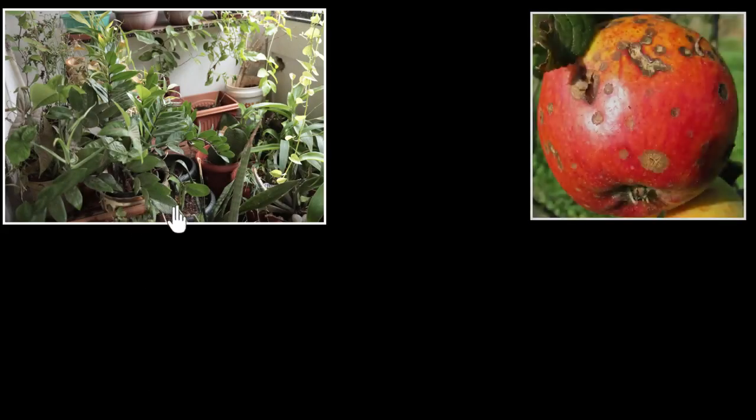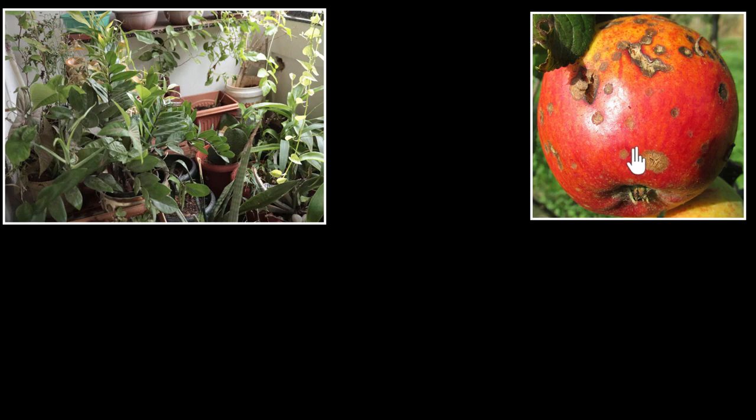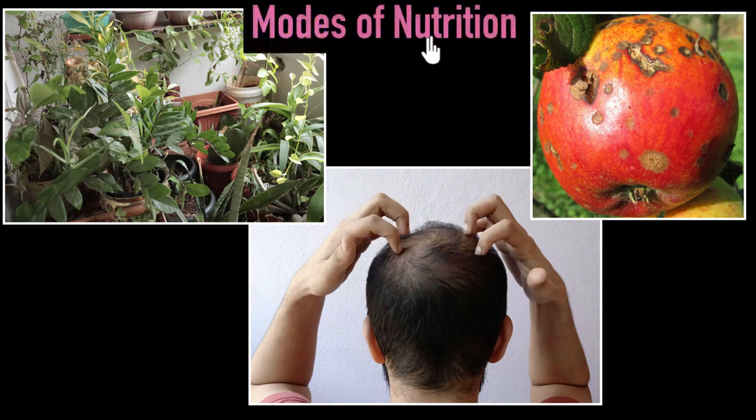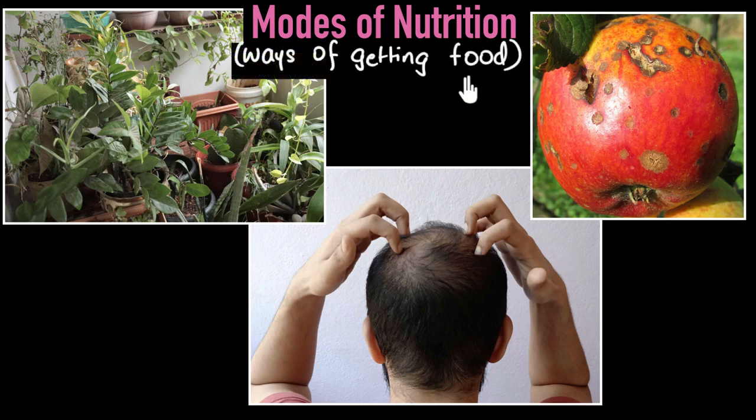Why do these plants in my balcony need sunlight? Why is this apple rotting? And why does my head itch so much? To answer these seemingly random questions, we need to figure out the modes of nutrition. Basically, what are the different ways of getting food? And that's what we'll do in this video.